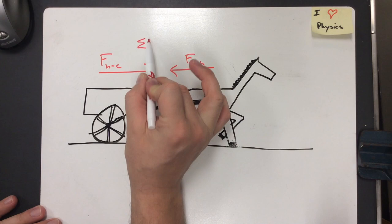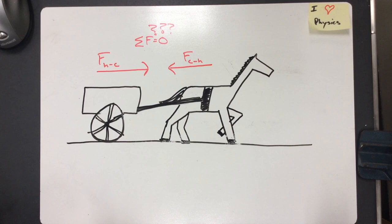And while it's true that those forces are equal and opposite, they don't add together to give us a net force equal to zero, because if this is the case, the horse would never be able to pull a cart.